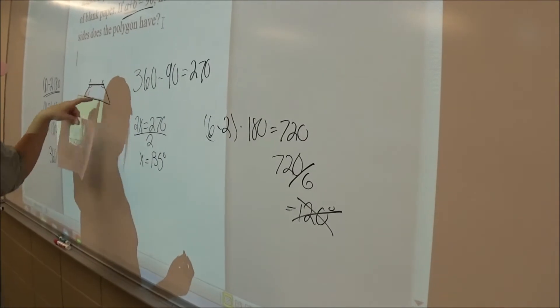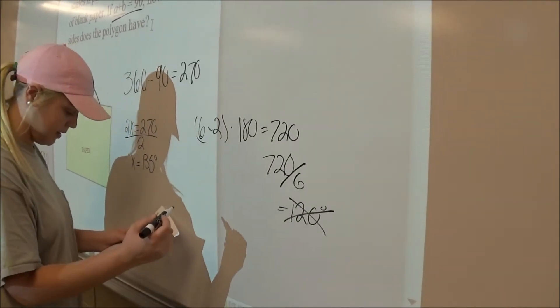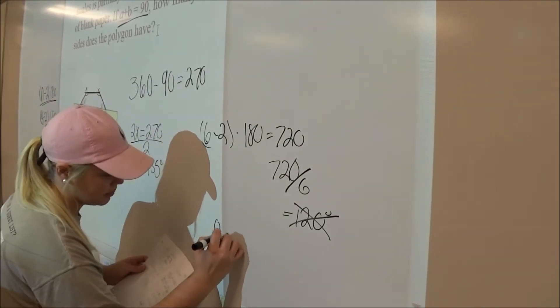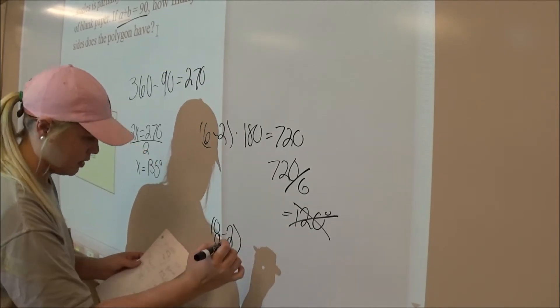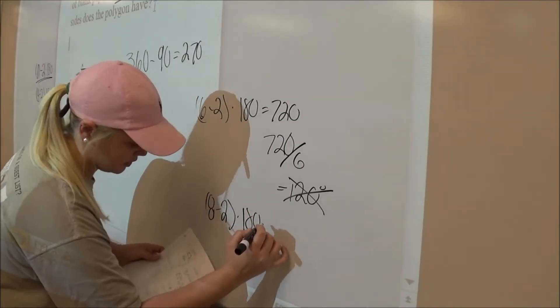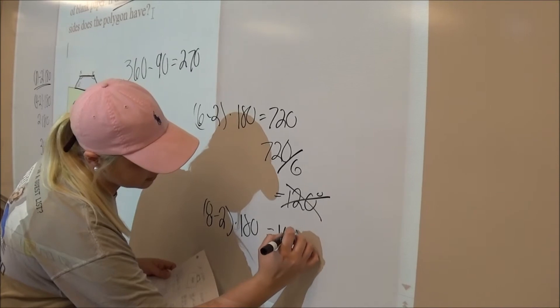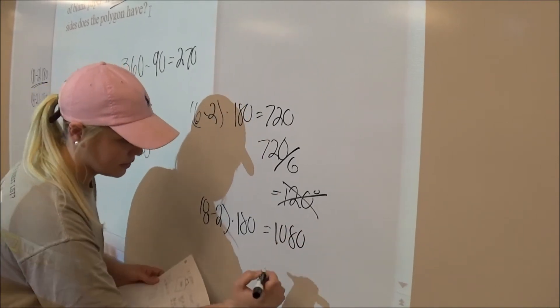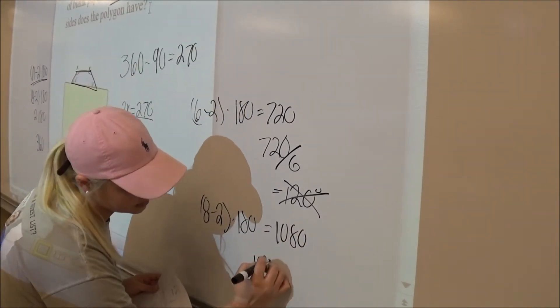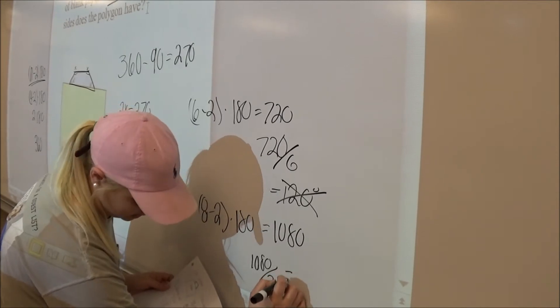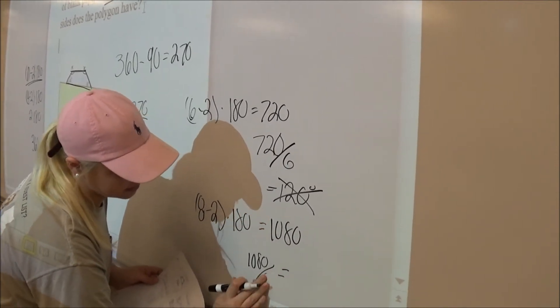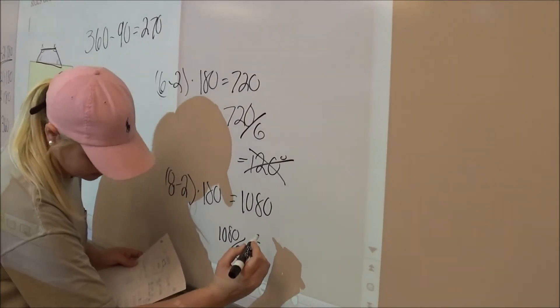So I tried 8 because it kind of looks like an octagon. So I did 8 minus 2 times 180, and that equals 1080. And then I divided that by 2... I divided it by 8, not 2, sorry. And that gives me 135.